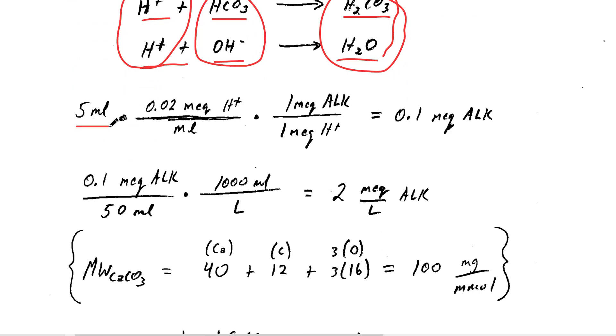We added five milliliters of this acid, and it was 0.02 milliequivalents per milliliter. That's what 0.02 normal means. We know that one milliequivalent of H+ reacts with one milliequivalent of alkalinity. So we have 0.1 milliequivalents of alkalinity in that 50 milliliter sample.